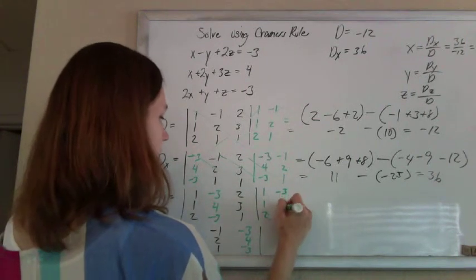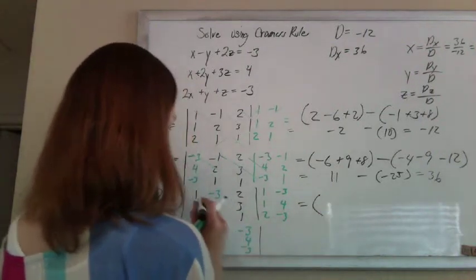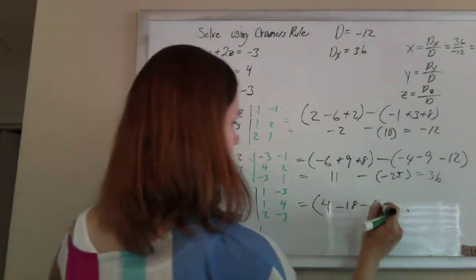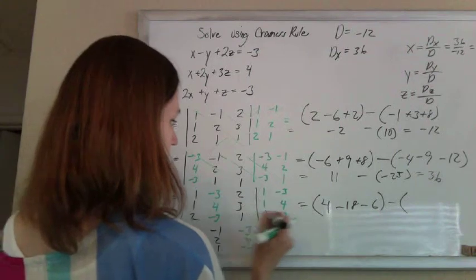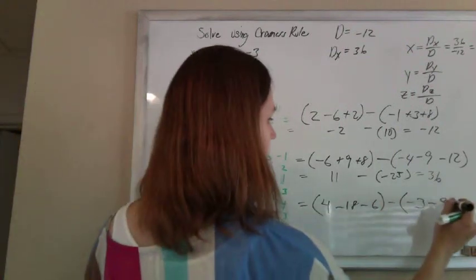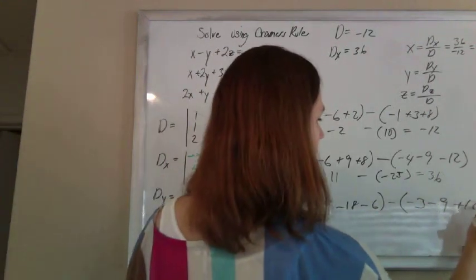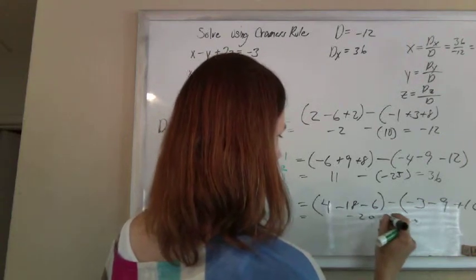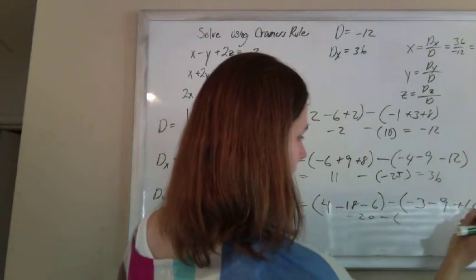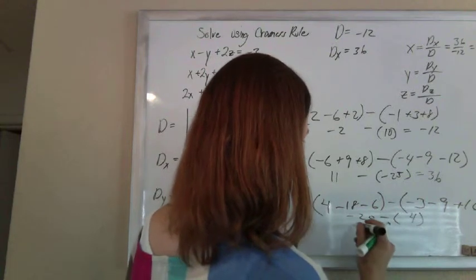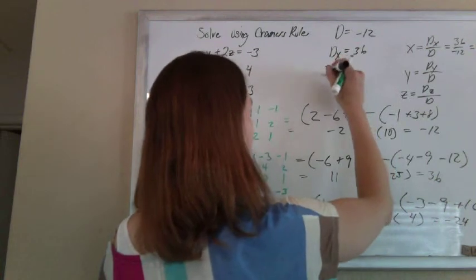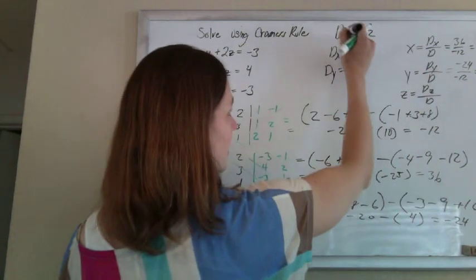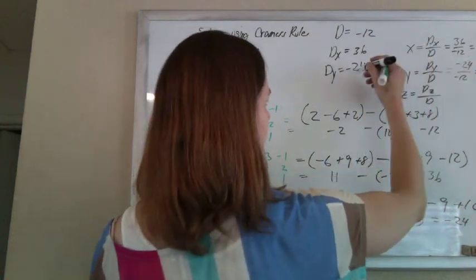All we have to do is do these last two determinants to get y and z. So here we go again. So this is going to be 1 times 4 times 1 is 4. Negative 3 times 3 times 2 is negative 18. 2 times 1 times negative 3 is negative 6. Subtract: negative 3 times 1 times 1 is negative 3. 1 times 3 times negative 3 is negative 9. 2 times 4 times 2 is 16. So that's negative 14 minus 6 is negative 20, minus negative 12 plus 16 is positive 4. So this is negative 24. So dy is negative 24, which means y is negative 24 over negative 12 is positive 2. Remember that D is the denominator for everybody.